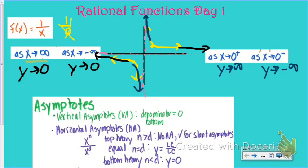When we talk about graphing these functions, there are a couple of things we need to find. The first and most important are our asymptotes. There are two different kinds. The first is a vertical asymptote — that's the result of the denominator equaling 0. Any place the bottom equals 0, I'm going to have a vertical asymptote. As a result, the vertical asymptote is something you cannot cross.